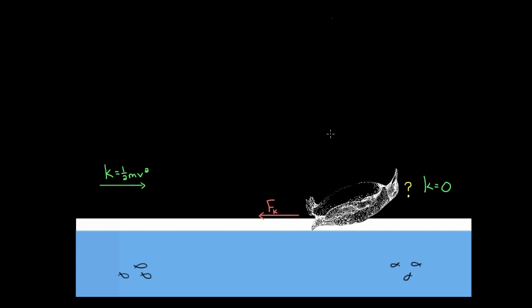The other way we could see this is that we could just use the formula for work done by any force. And that formula is Fd cosine theta. If we want to find the work done by the force of friction, we would plug in the force of friction — the magnitude of it — times the distance that the penguin slid to the right.